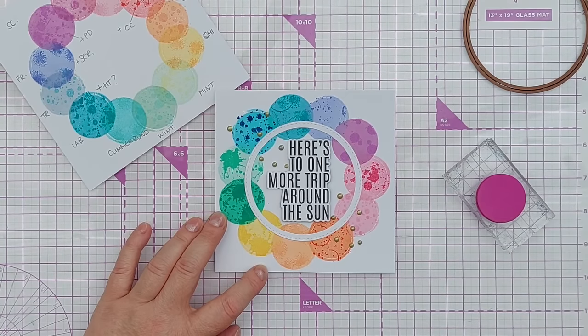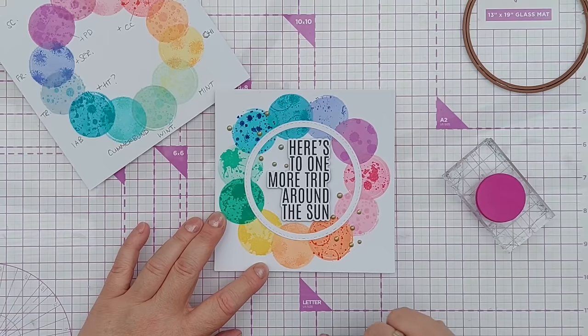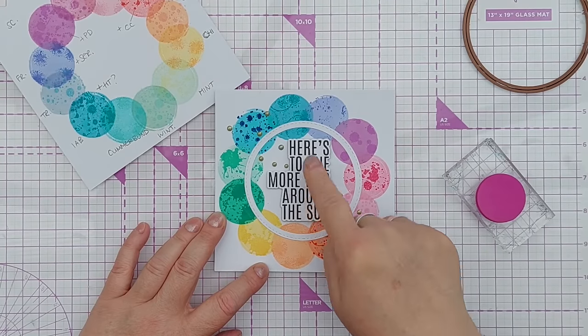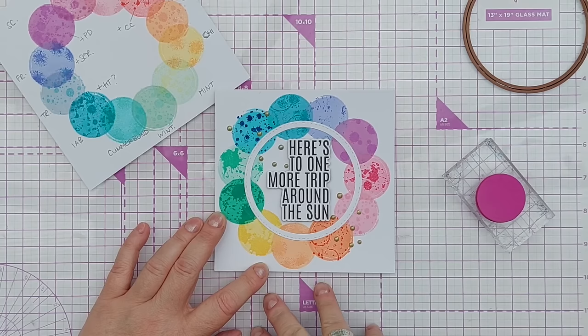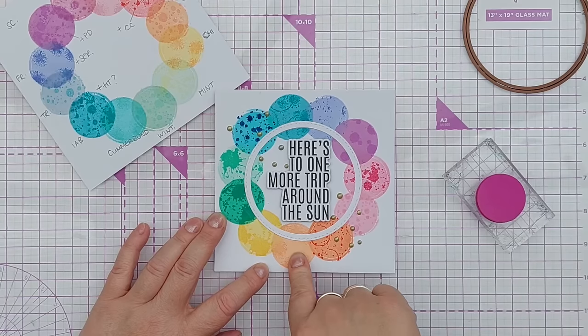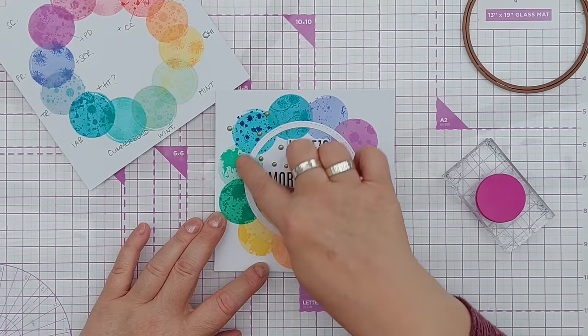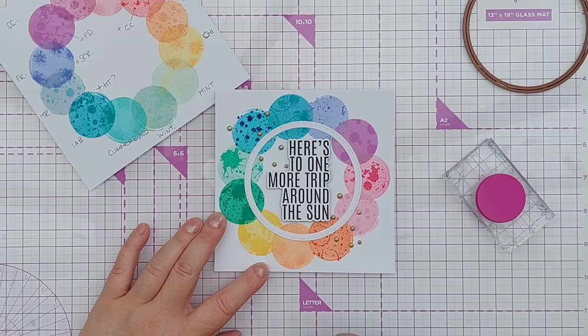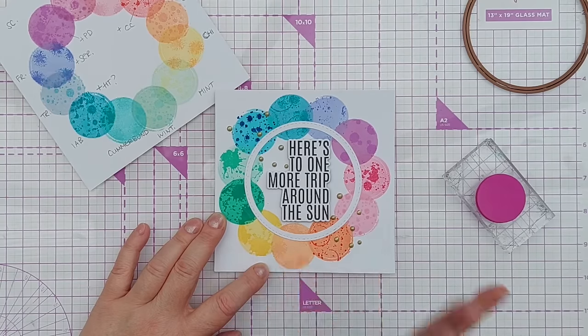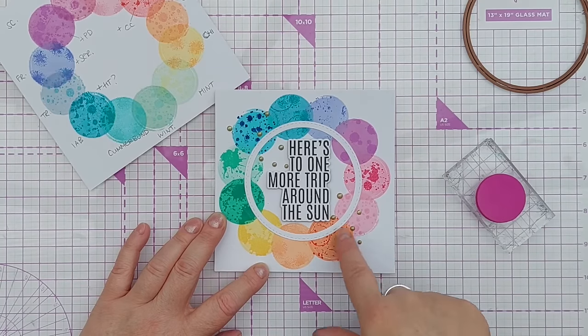Then I thought I've got that stamp and die that says here's to one more trip around the sun so I could turn this into a birthday card, like planets going around the sun. I popped that on there and thought it needs something else so I added a stitched circle frame that I cut with my stitched nesting circle dies and for a bit of bling I put some Nouveau drops on.